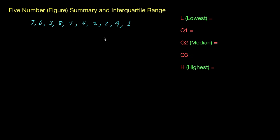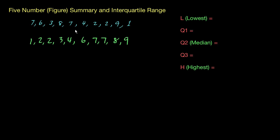First of all, whenever you start you need to make sure that the numbers you have are placed into ascending order. You can see here all our numbers are out of order so I'm going to put them into ascending order. I've started with one — that's our lowest value — and gone right through until I found our highest number which is nine. We can now move on to creating the five number summary.